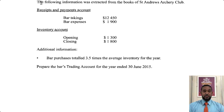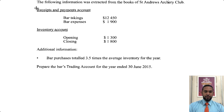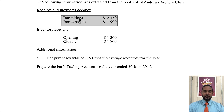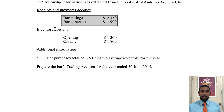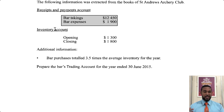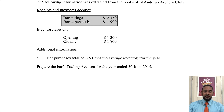There's one more part of this question. For the last part, it says the following information was extracted from the books of St. Andrew's Archery Club — receipts and payments account, bar takings, bar expenses. Clubs do not buy and sell goods as their major form of revenue, so in their income and expenditure account you won't see sales minus cost of goods sold like in a regular for-profit income statement. The takings is the sales from that particular part of the establishment — like cafeteria takings.